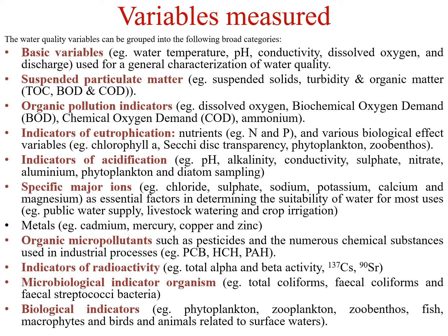There are various variables used for analysis of water quality, categorized into broad groups. First, basic variables like water temperature, pH, conductivity, dissolved oxygen, and discharge — used for general characterization. Second, suspended particulate matter such as suspended solids, turbidity, and organic matter. Third, organic pollution indicators: dissolved oxygen, biological oxygen demand (BOD), chemical oxygen demand (COD), or ammonium ion.